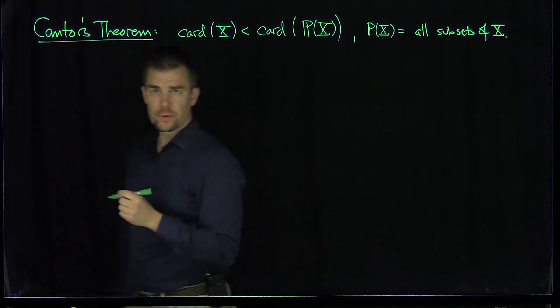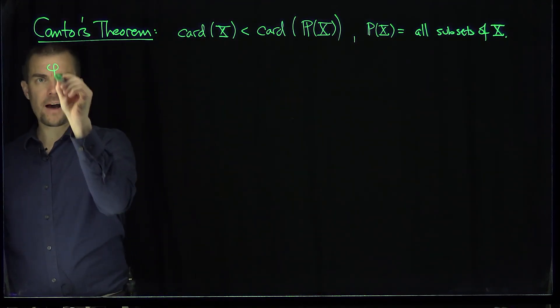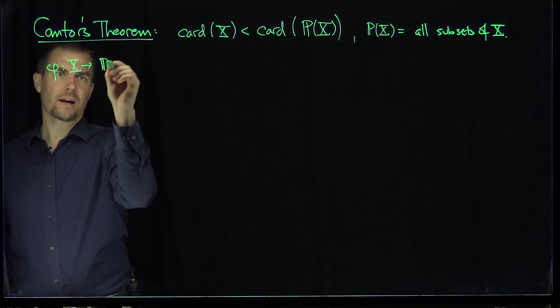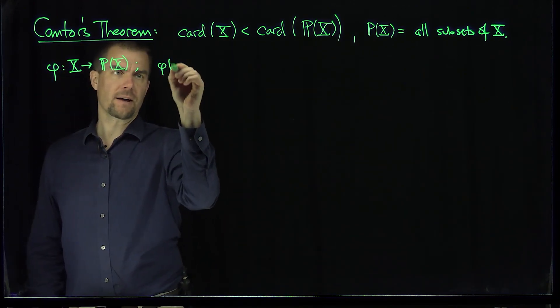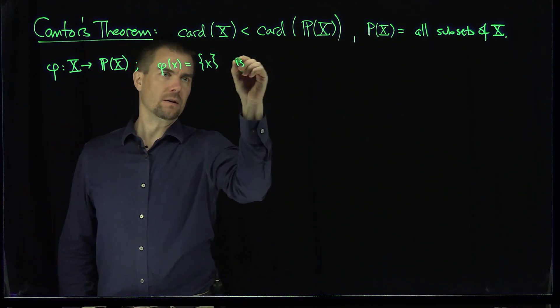And so how do we do this? Well clearly there's an injection between X and the power set of X. If I look at the map Phi, mapping X into the power set of X, which by the rule that says Phi of X is just the single element set X, is clearly an injection.